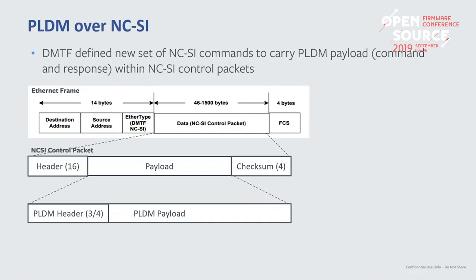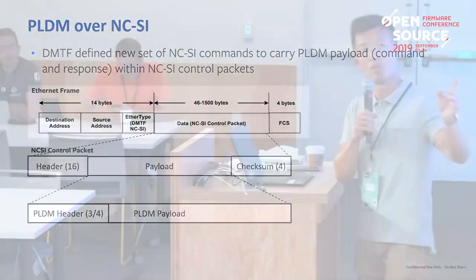Here are more details on PLDM over NCSI. We have a normal Ethernet frame with a special type identifier to identify it as an NCSI control packet. Within the NCSI control packet there is a specific NCSI command that allows us to carry PLDM traffic. The PLDM payload is limited by the Ethernet frame size — the total NCSI frame can be 1500 bytes, so the PLDM payload can be something like 1476 bytes. If you run PLDM over other media the maximum size will be different.